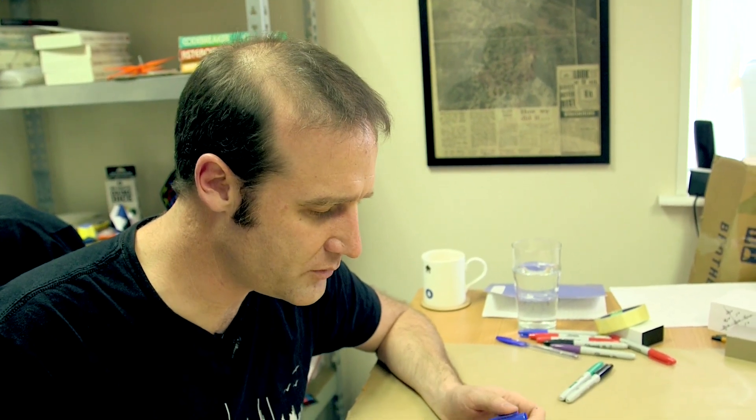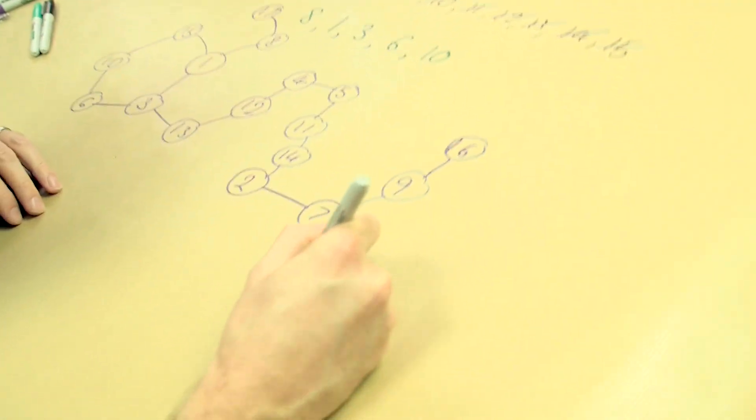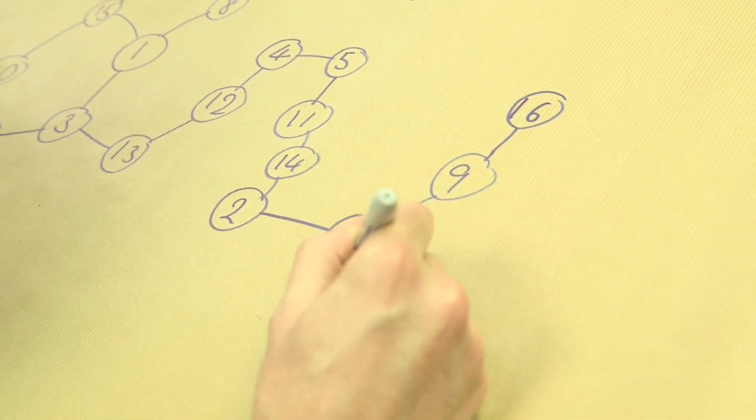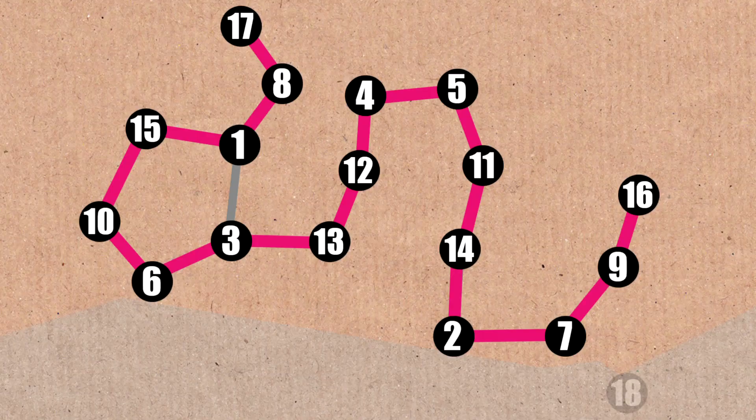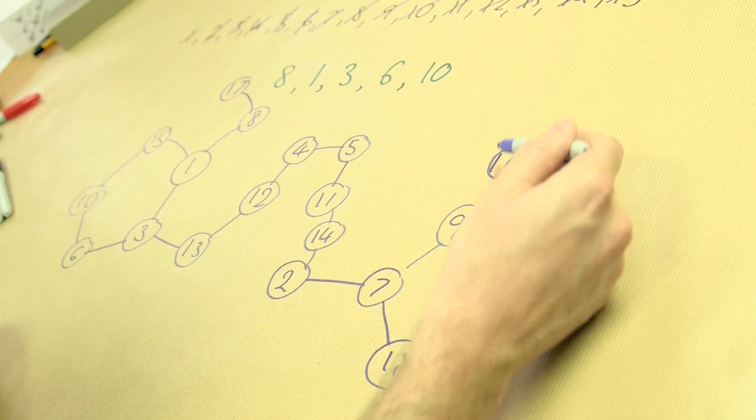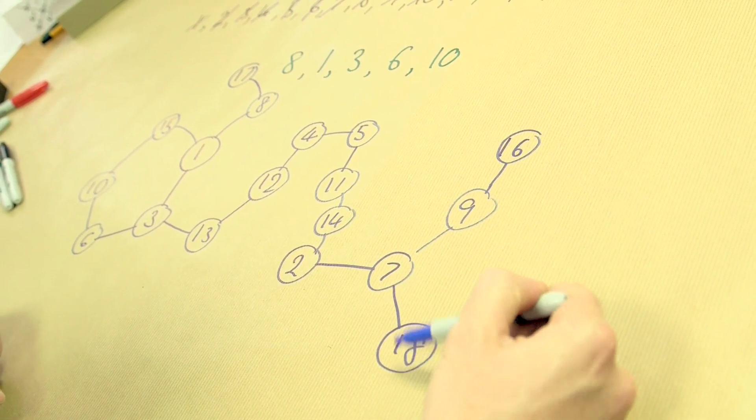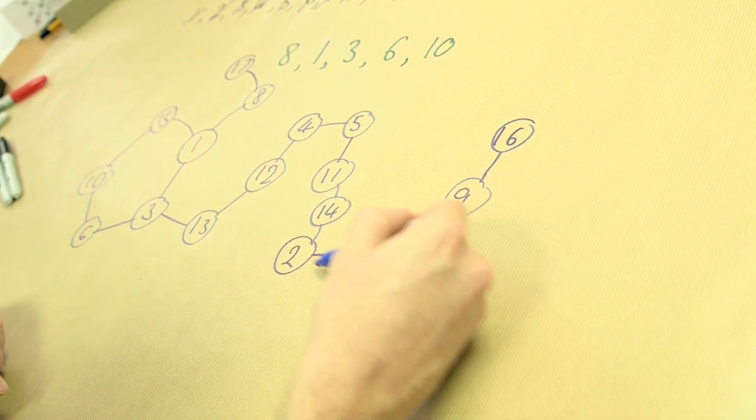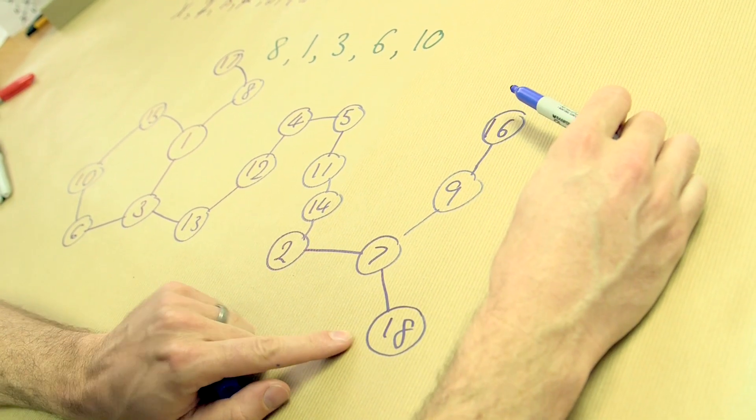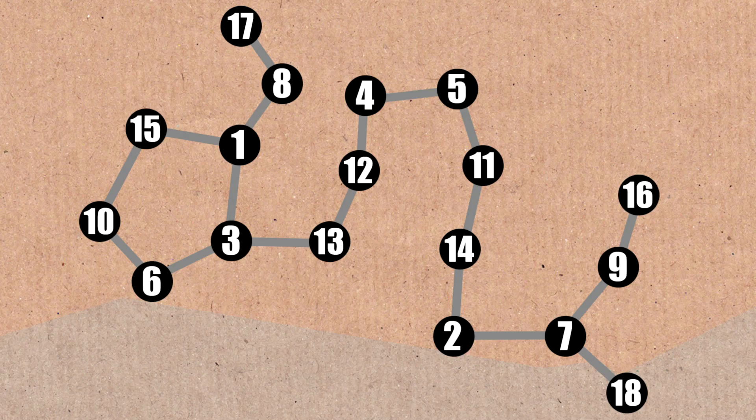But why stop there? Why not do it from one to eighteen? Eighteen fits in over here. There's eighteen. Oh, now, now we've got a problem. Because, if we put eighteen over there, there's no longer a way to go through the whole network, going through every single number once and once only. Because we've got a tail here sticking off, and we've got a little tail sticking here. And if we start here, and go that way, we can never get back to eighteen. And if we start here, we can never get back for these guys. So, we've broken it. So, it works for all the numbers from fifteen to seventeen, and then eighteen breaks it.